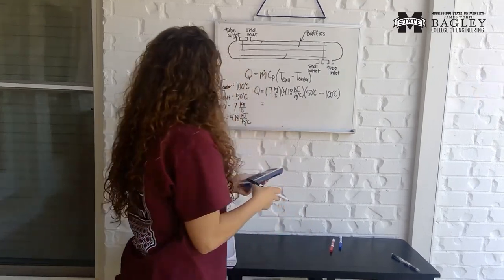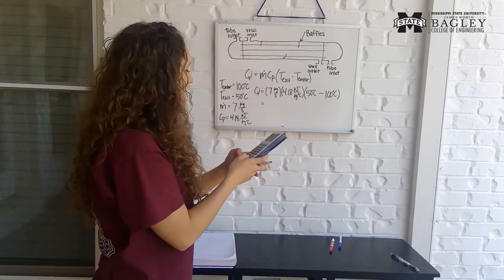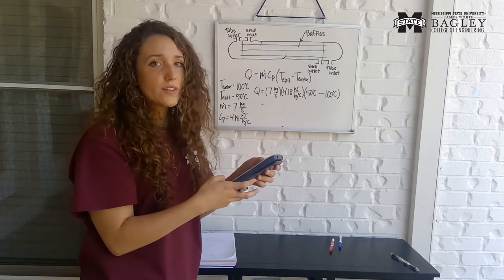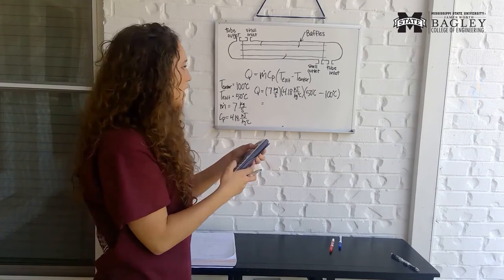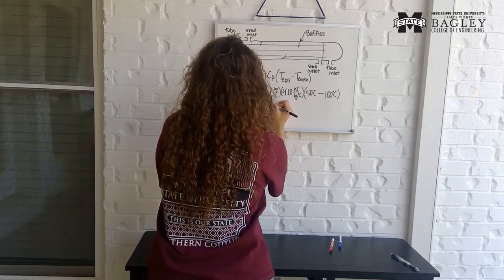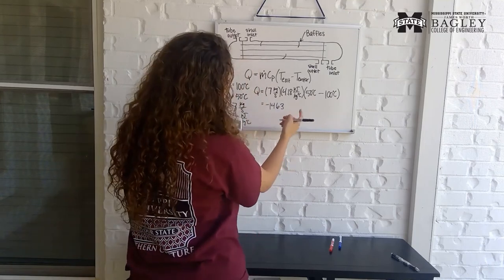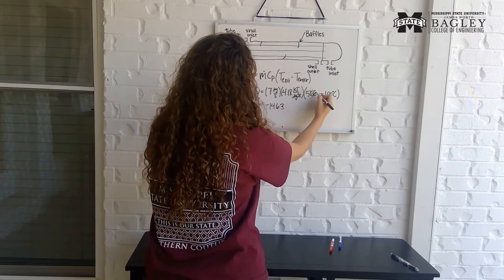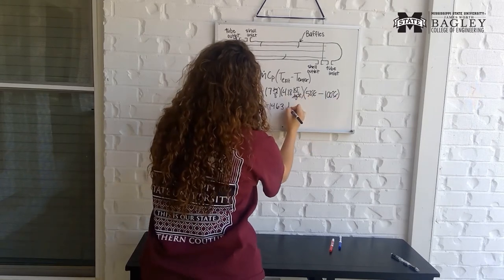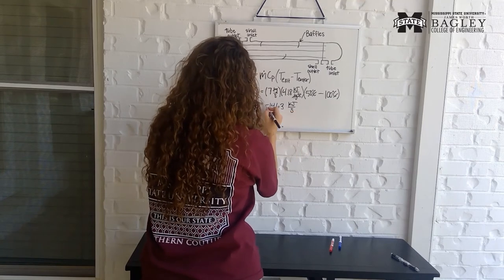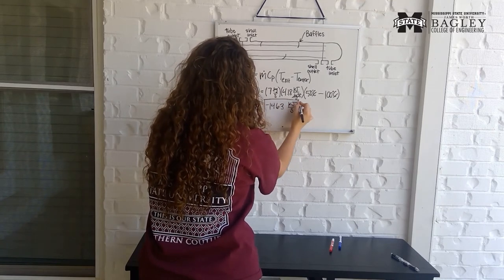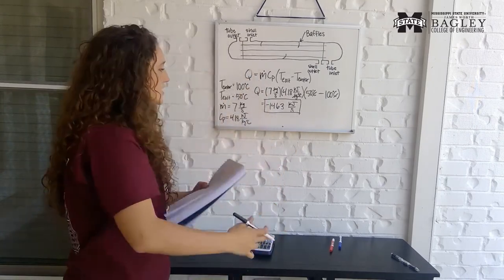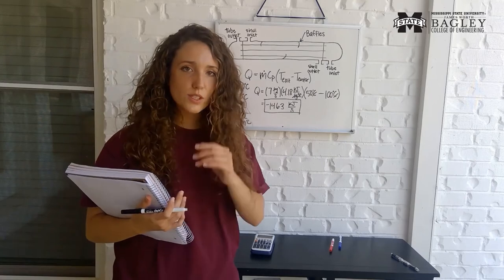We're going to plug all this into our calculator. Seven times 4.18 times 50 minus 100, which means we'll have a negative number. And we get negative 1463. If we want to go through units, we can see that kilograms cancel with kilograms and degrees Celsius cancel with degrees Celsius, leaves us with kilojoules per second. So this is the rate of heat transfer for the fluid going through the tube. There are 1463 kilojoules per second.